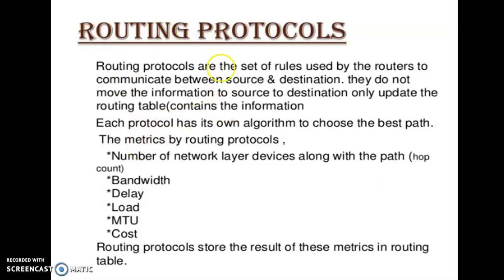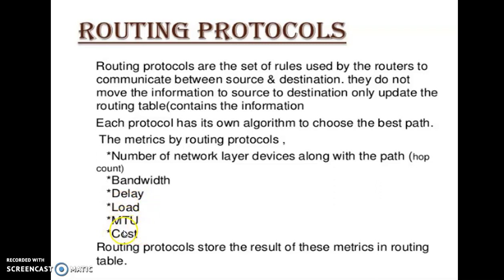Each protocol has its own algorithm to select the best path. One should remember routing protocols have their own algorithm which will select the best path for the data to be traveled from source to destination. All these routing protocols have different metrics such as: how many network layer devices are there in the path, the bandwidth associated with the transmission medium, the delay which takes place when the data travels from source to destination, the load on the transmission medium, the MTU — which stands for maximum transmission unit — and finally the cost associated with the link.